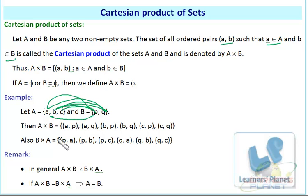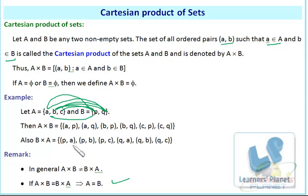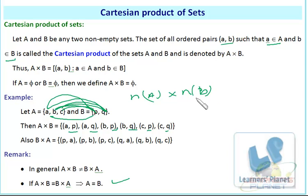Note that A cross B is not equal to B cross A in general — A cross B equals B cross A only when A equals B. However, the number of elements in A cross B and B cross A will be the same, given by the number of elements in A times the number of elements in B. For example, if A equals {2, 4, 5} and B equals {7, 8, 9}, then n(A cross B) equals 3 times 3 equals 9.